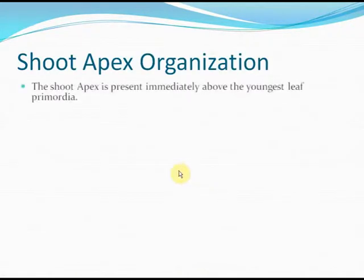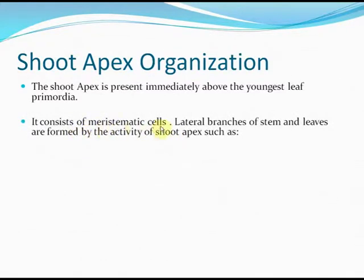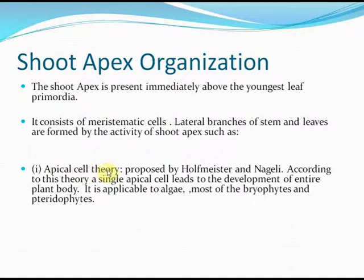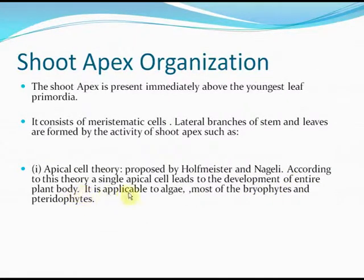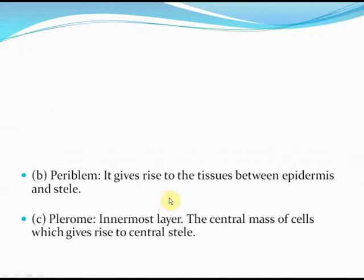Shoot apex organization: it is present immediately above the youngest leaf primordia and consists of meristematic cells. Lateral branches of stem and leaves are formed by the activity of the shoot apex. The apical cell theory, proposed by Hofmeister and Nägeli, states that a single apical cell leads to the development of the entire plant body; this is applicable to algae, most bryophytes, and pteridophytes.